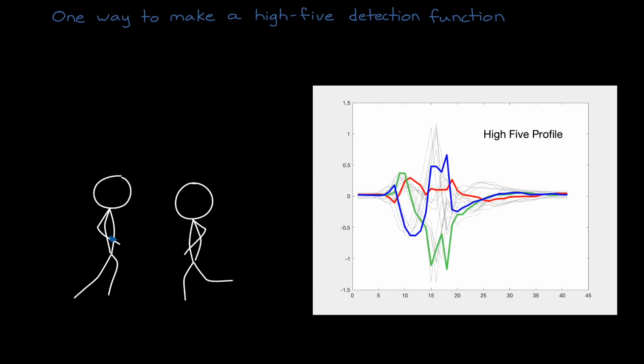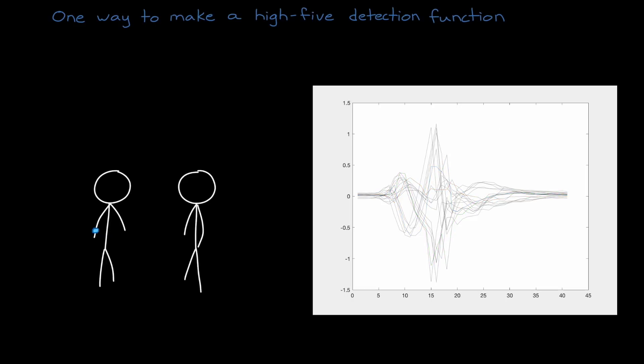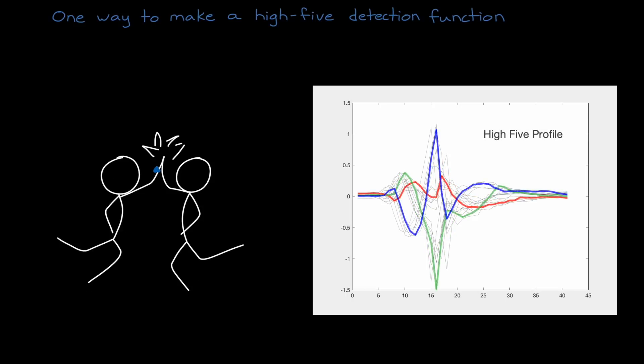But, that wouldn't cover the cases for the high-fives that fall outside of these ranges, and that we didn't collect data for. So, instead of having a database of millions of profiles that we need to check, you know, one for every possible type of high-five, we might be a little smarter about it, and realize that instead of looking at the pattern as a whole, which can have wild variations, maybe we can find a set of features that they all have in common, and just check for those.